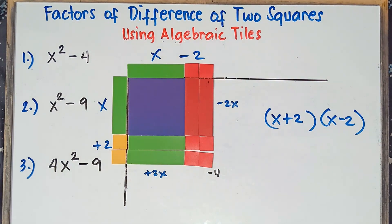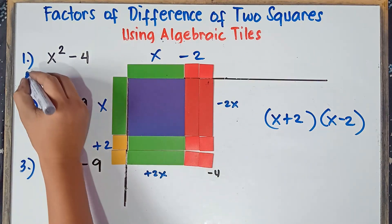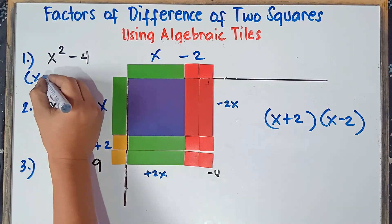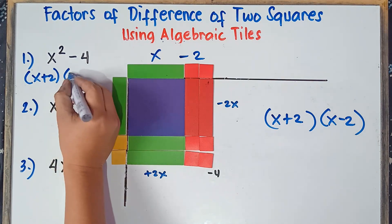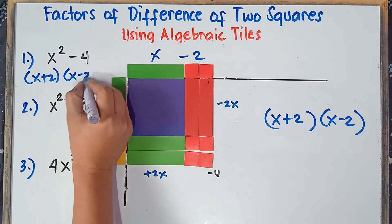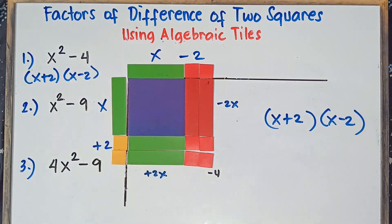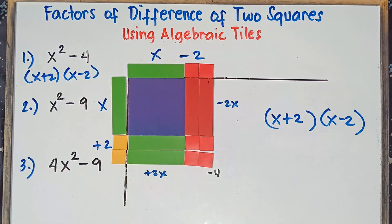So therefore the factors are: x plus 2, and the other one, x minus 2. That's the answer with regards to example number 1 using algebraic tiles.